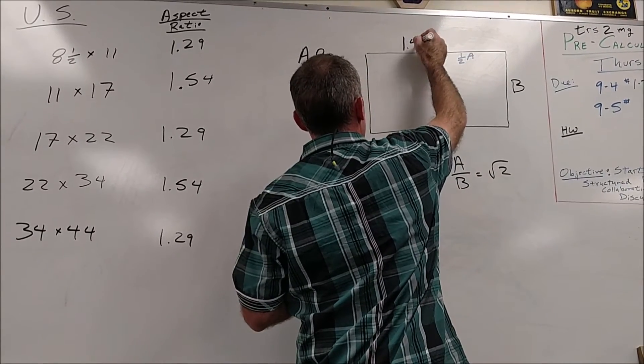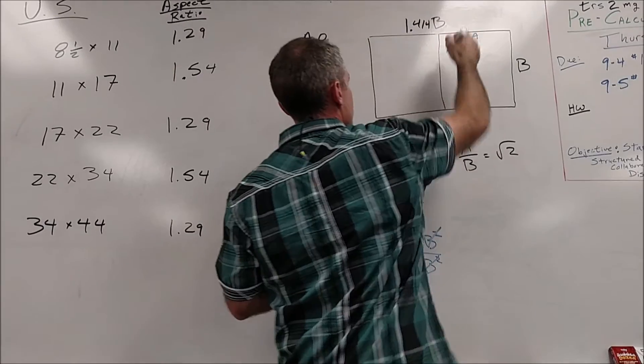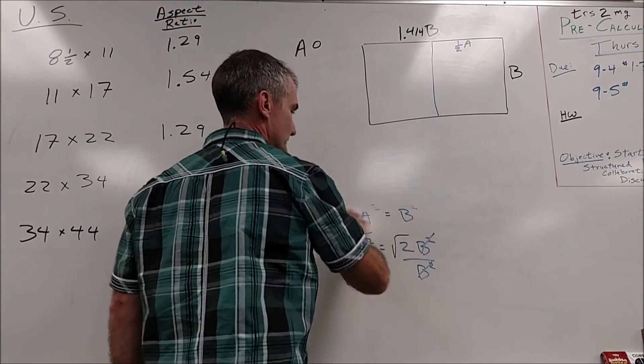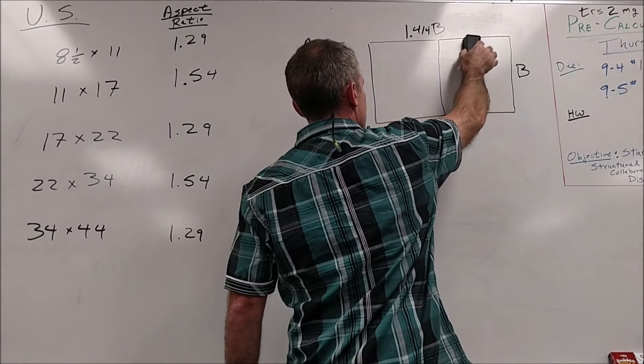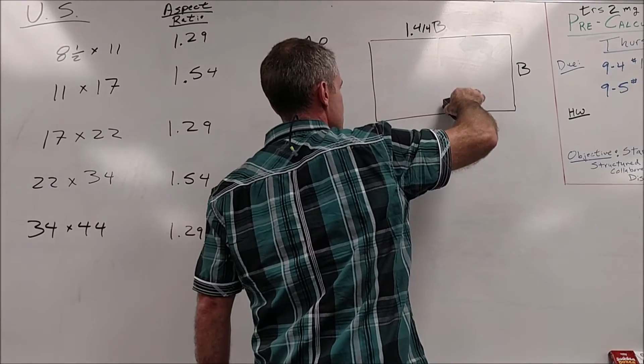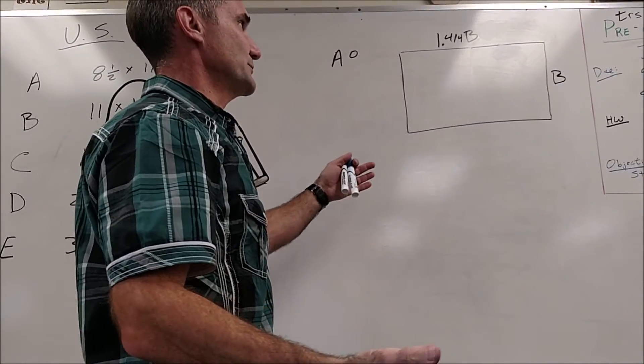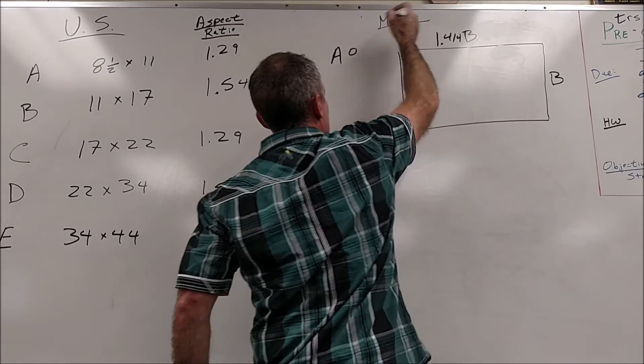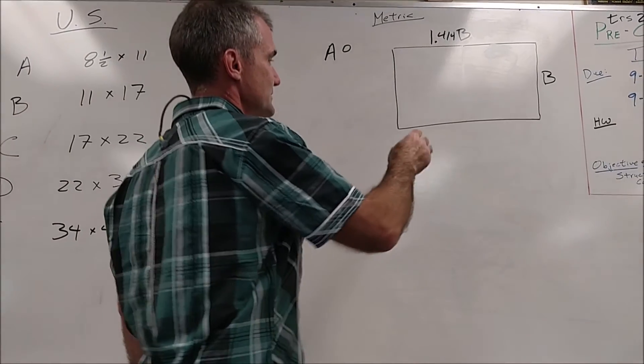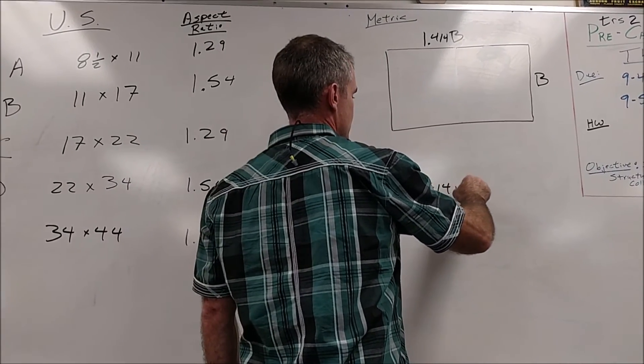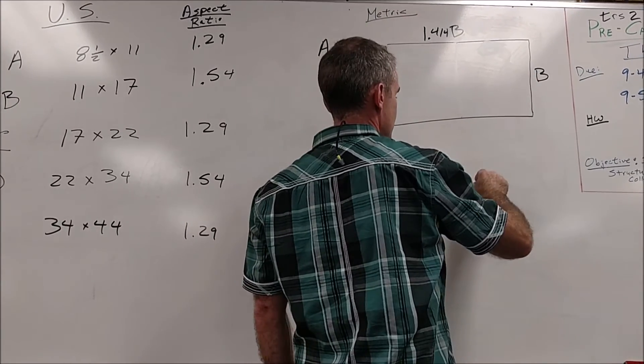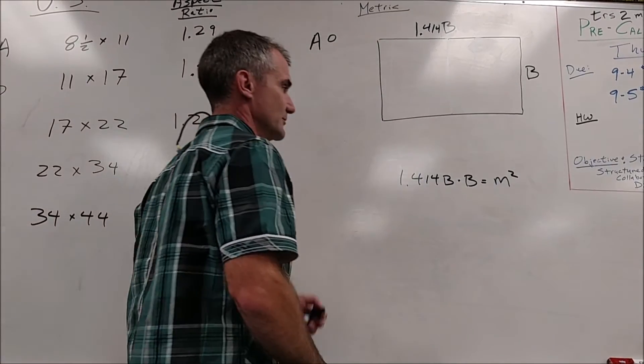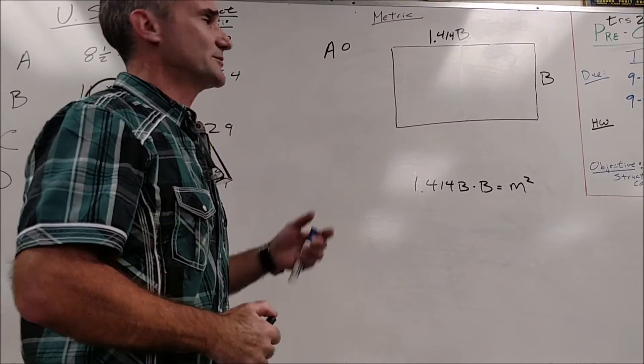So this is root 2 is the same thing as 1.414. So whatever this is, this is 1.414 times longer. And what's cool about it is, this is a full sheet of A0 paper. And using these dimensions, they wanted it to be equal to a full meter because it's a metric system. So here's metric paper sizes. So we just do base times height equals 1 square meter.